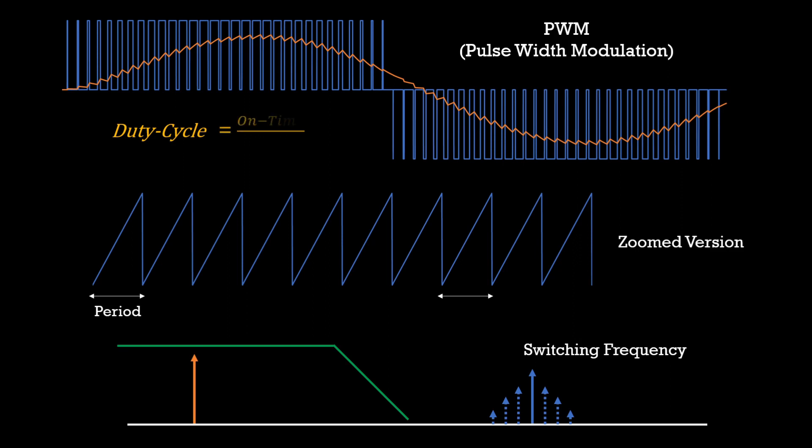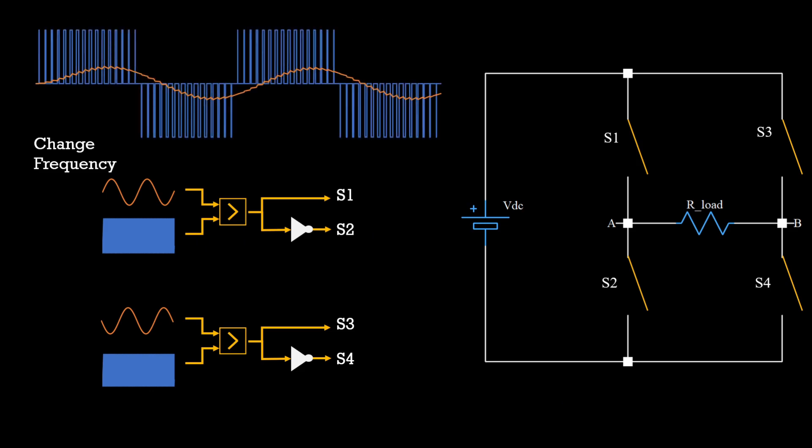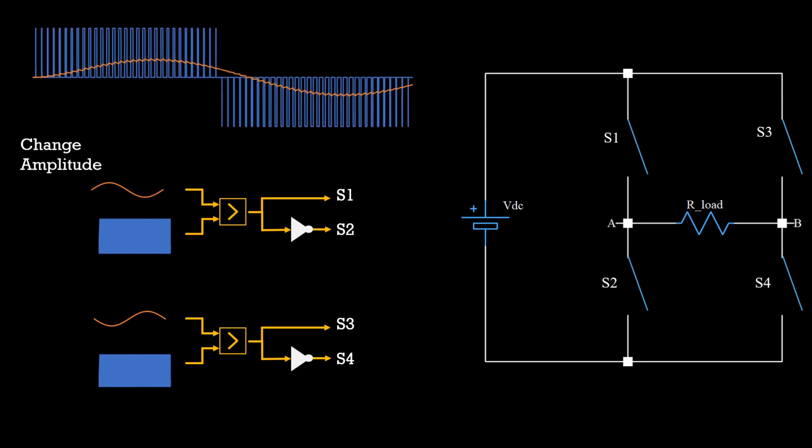Duty cycle is nothing but the ratio of on time to total period. Also, observe that if I change the frequency of reference sine wave, then I can change the frequency of inverter output. Over here, we have doubled the reference frequency and the output frequency also got doubled. And if I change the amplitude of reference sine wave, then it will reduce the fundamental component or in other words, you will get lesser output voltage from the inverter if the reference amplitude is lesser.